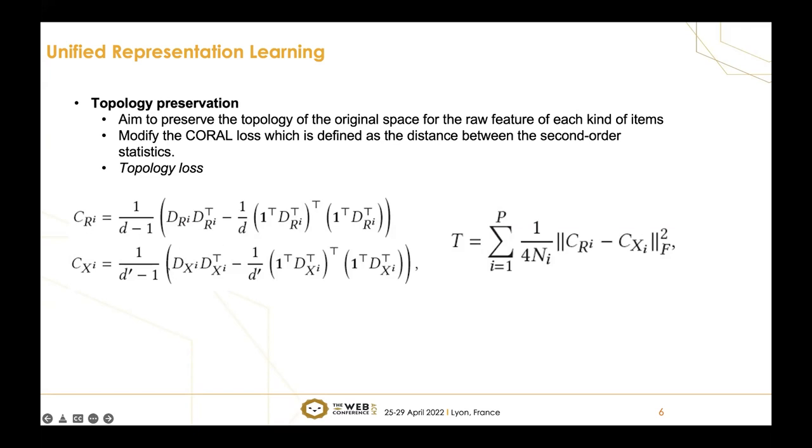In the topology loss, DR is the samples in the old space, and DX here is the representation of samples in the new space, also the unified space. After this, we obtain the covariance matrix CR and CX. Finally, we define the topology loss as the matrix norm of these two matrices. So we got the topology loss T.